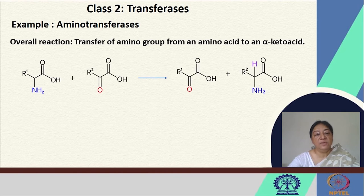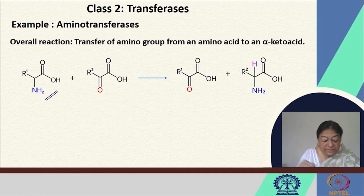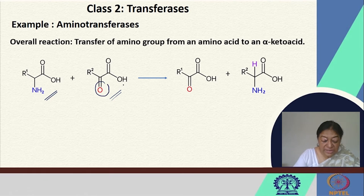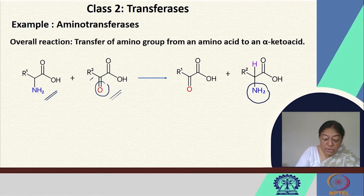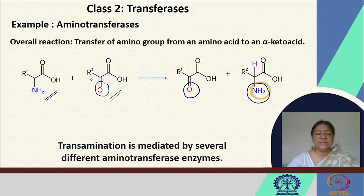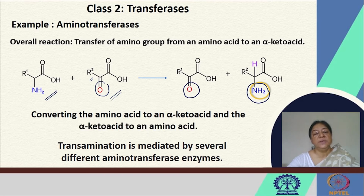The overall reaction involves the transfer of an amino group from an amino acid to a keto acid. Here is our amino acid, which is going to be transferred to an alpha-keto acid. The amino group is transferred to R2, which originally had the keto acid, whereas R1 now becomes the keto acid. Transamination is mediated by several different aminotransferase enzymes, converting the amino acid to an alpha-keto acid and the alpha-keto acid to an amino acid.